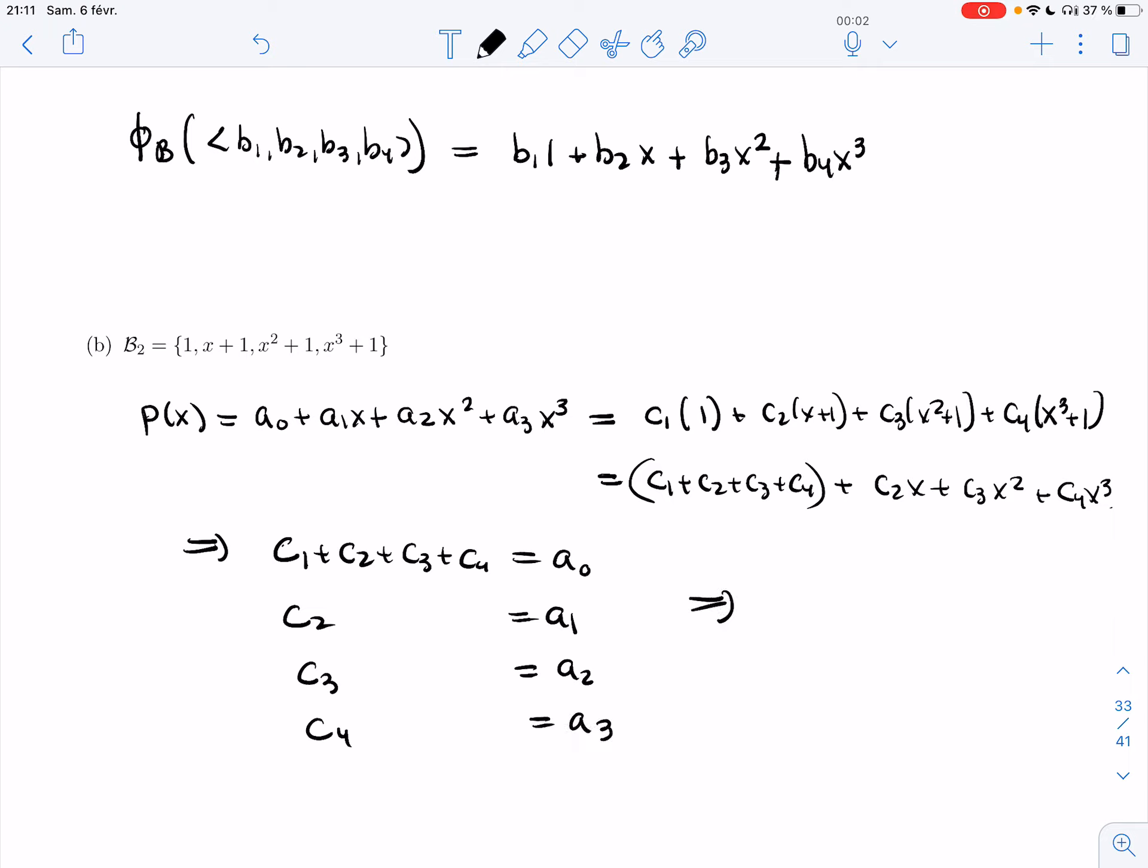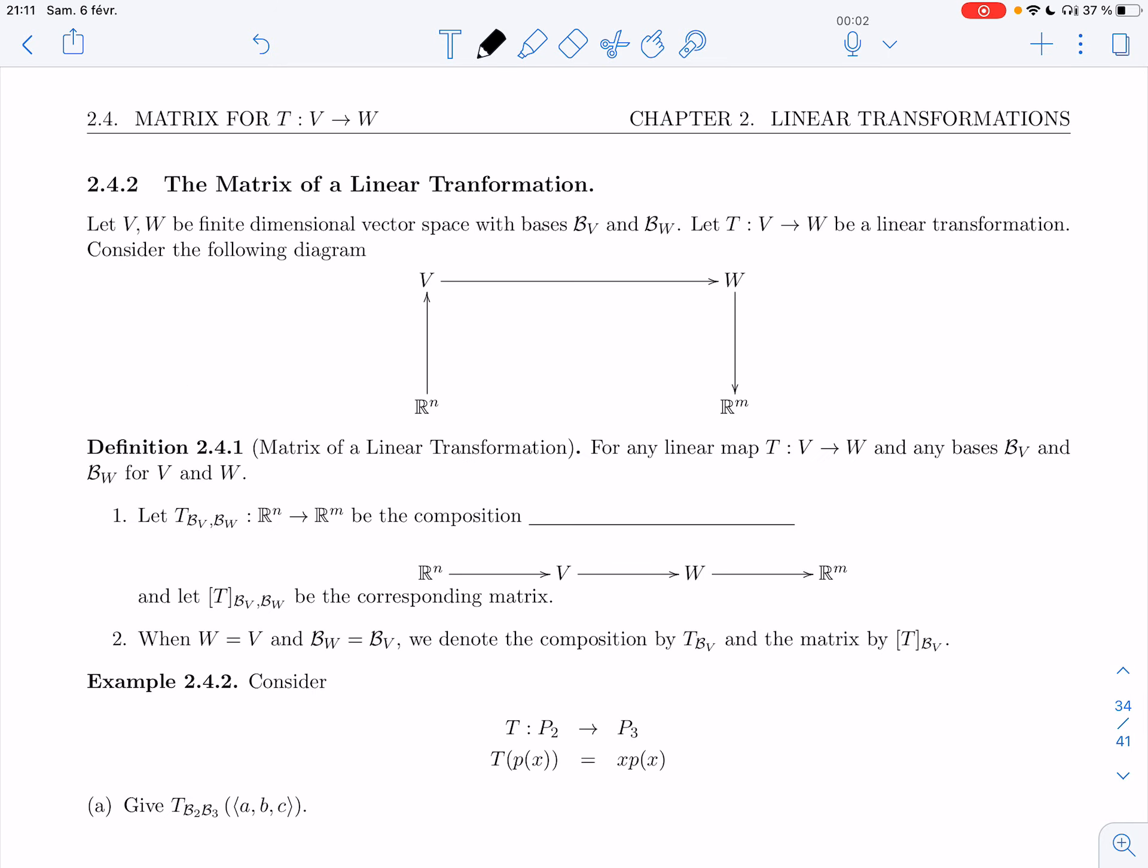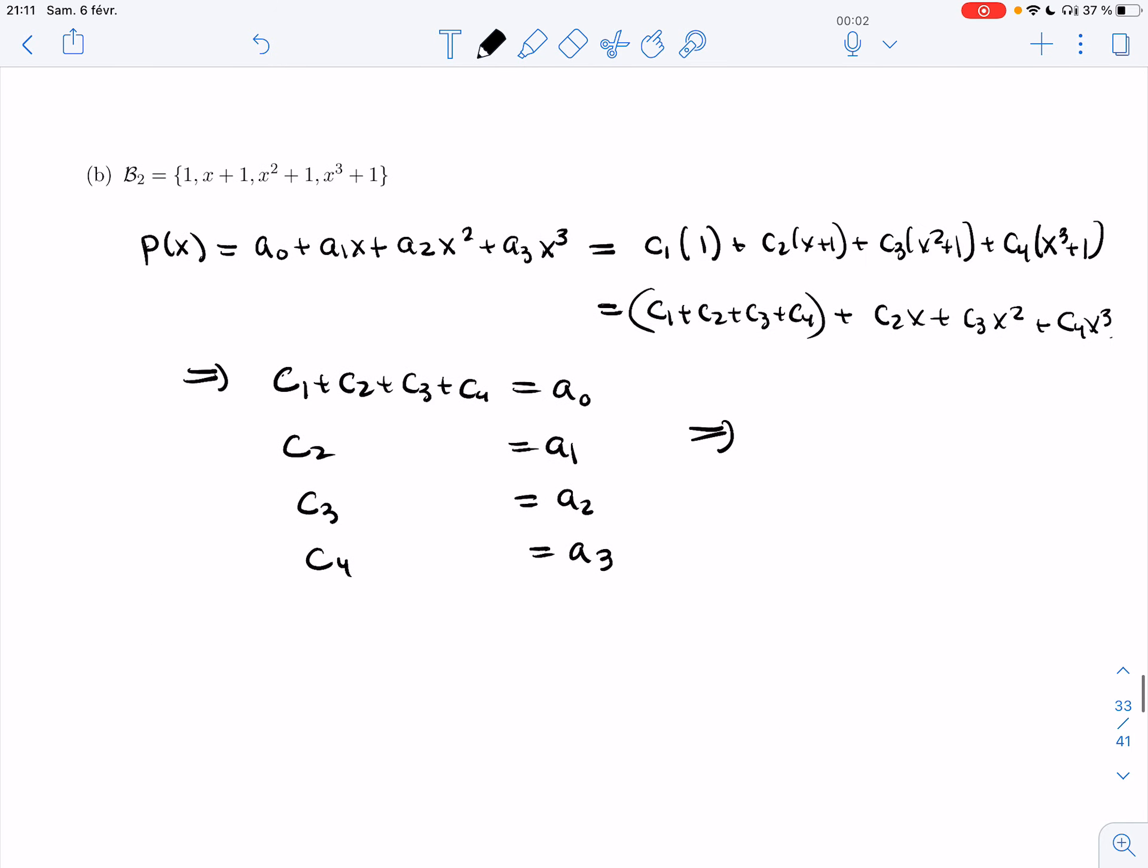And so we solve this. These three are completely settled, so I just have to find what C₁ is here. So I get that C₁ is a₀ - C₂ - C₃ - C₄, and so that's a₀ - a₁ - a₂ - a₃.